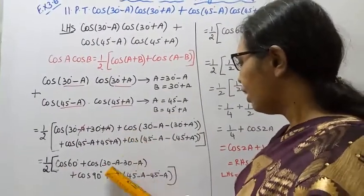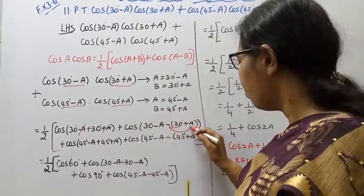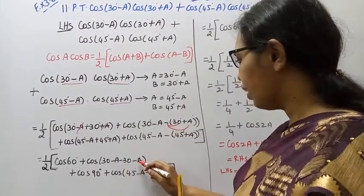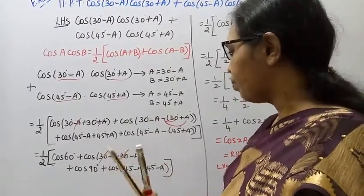30 plus 30 degree, 30 minus A minus 30, minus A, minus 30 plus 30 cancels, minus 30 plus 30 cancels. Cos.